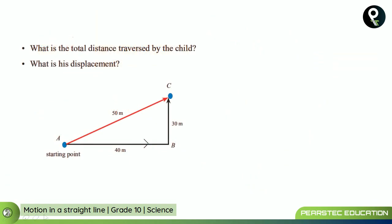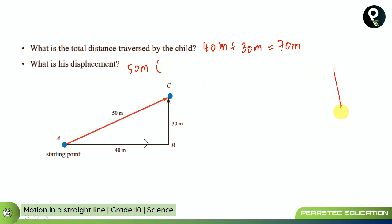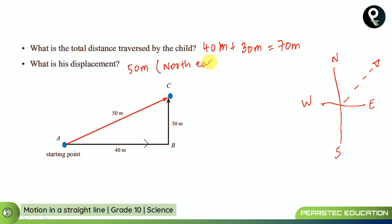Now consider this example: a child starts at A and travels to B — that is 40 meters — then from B to C, traveling 30 meters. The total distance is 40 + 30 = 70 meters. But the displacement is 50 meters. Since displacement requires a direction, and given that north is up and east is to the right, the child is traveling in the northeast direction. So the correct answer is 50 meters to the northeast.